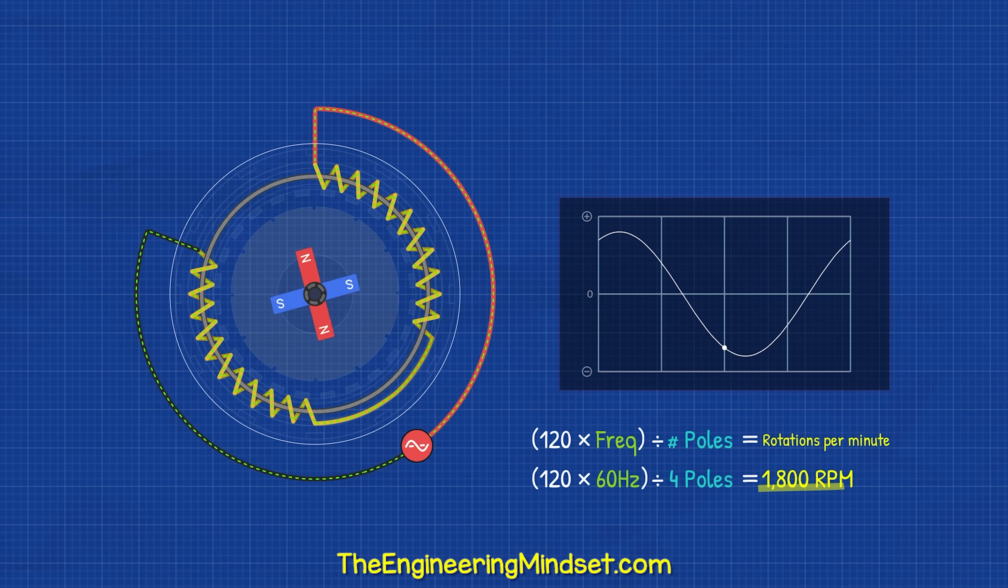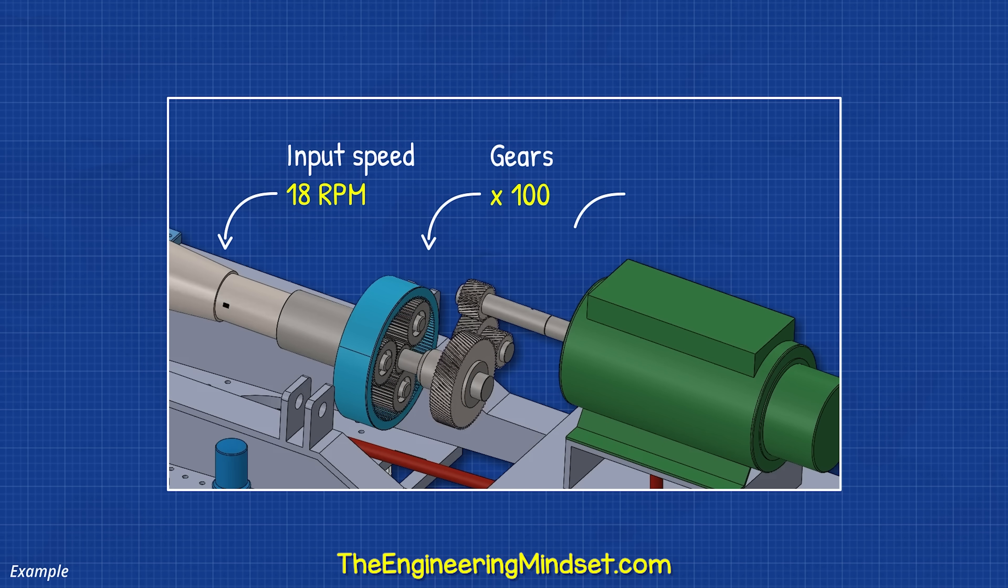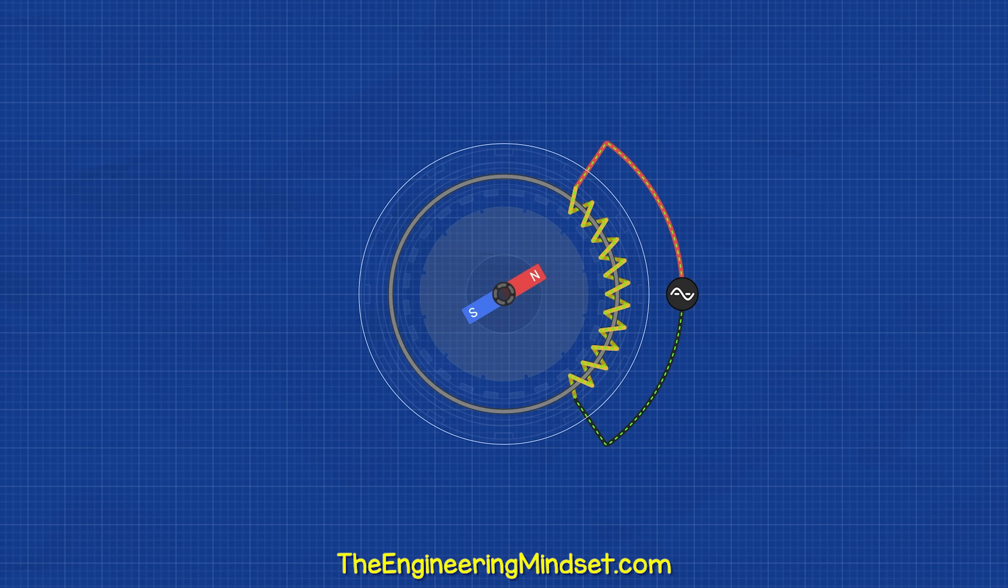However, we can reduce the speed by extending the coil and adding another magnet, because that will reduce the time taken for the north and south pole to rotate past the coil. We can also use gearboxes to increase the rotational speed, but for now we will stick to a basic model.